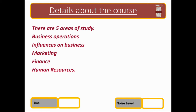We then move on to Influences on Businesses. This is a unit where we look at how governments, taxes, inflation, ethics, and the environment influence the way that businesses operate and how they operate in the markets that they do.